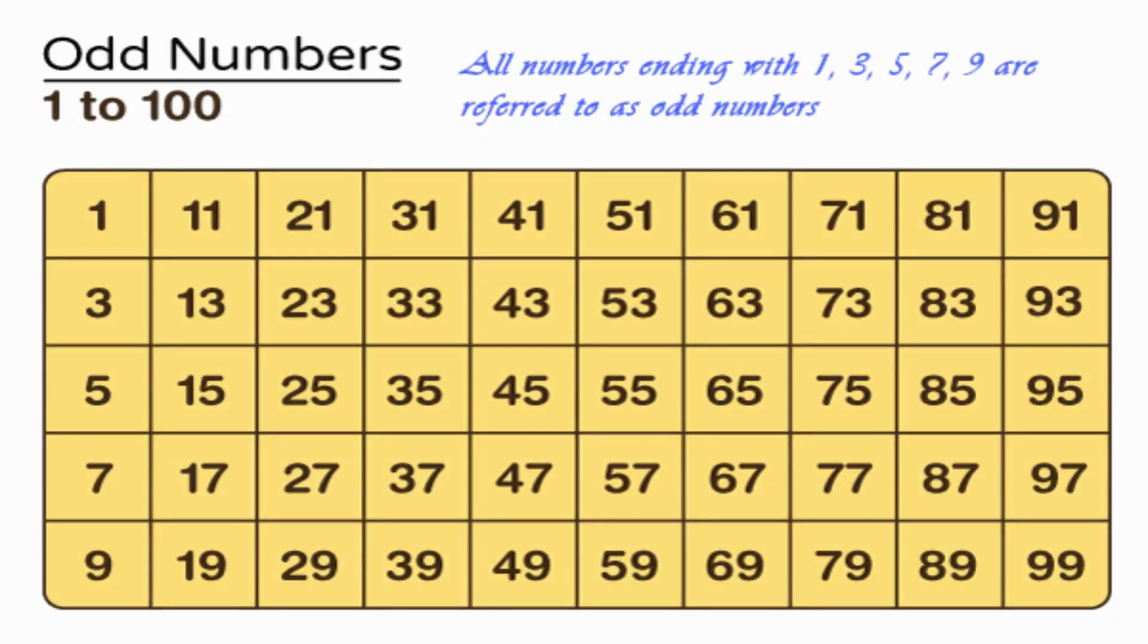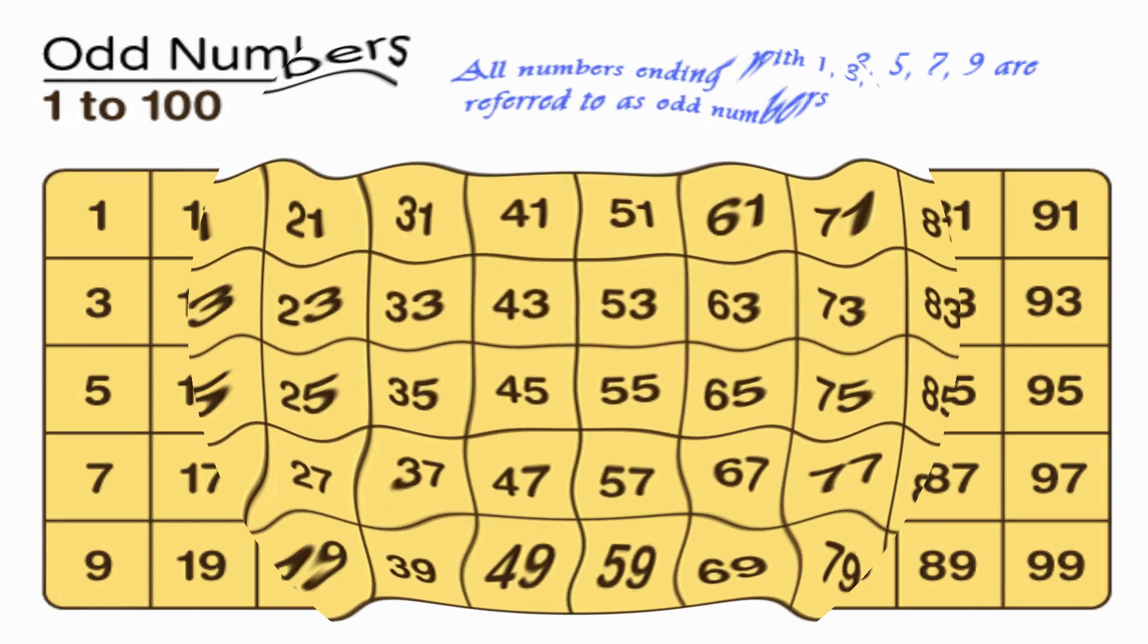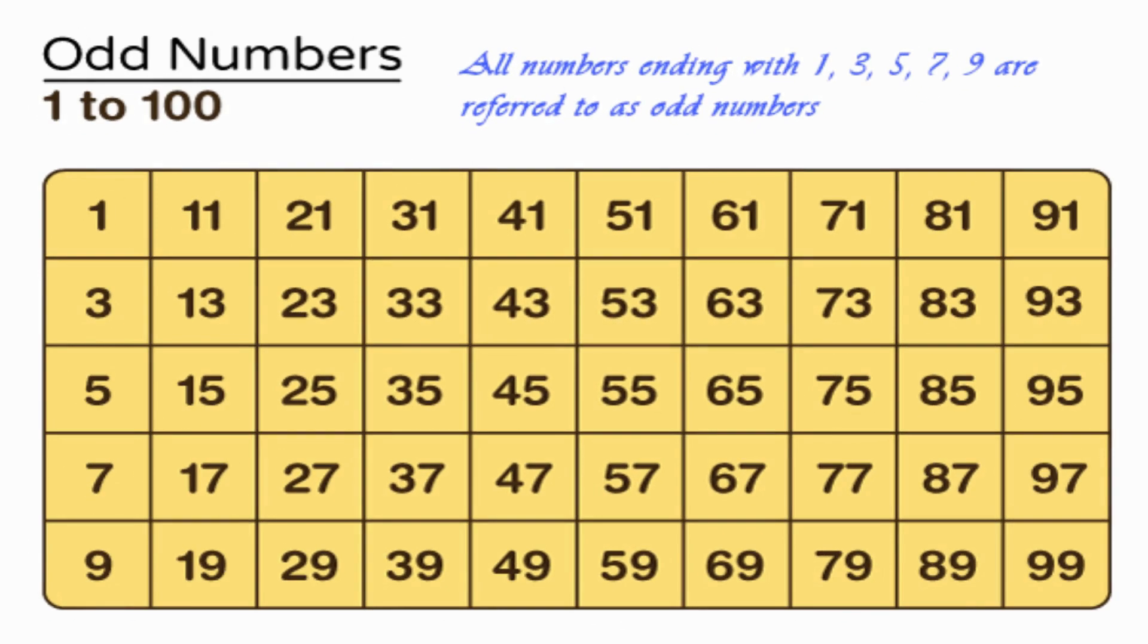Odd numbers from 1 to 100. All numbers ending with 1, 3, 5, 7, 9 are referred to as odd numbers.